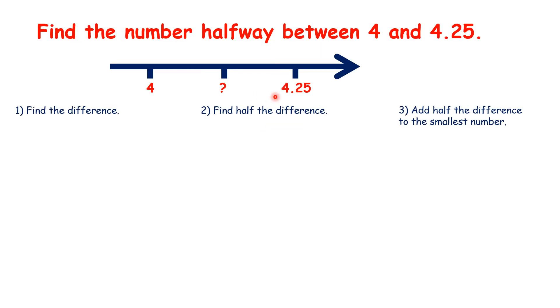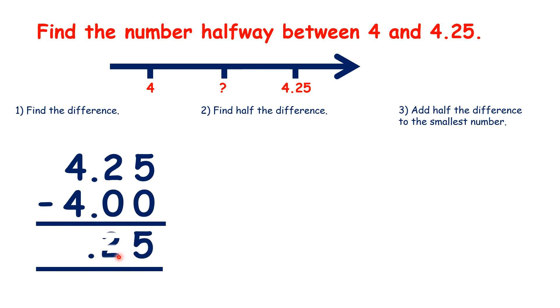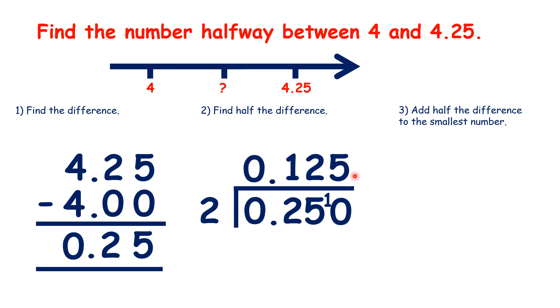Now, what is halfway between 4 and 4.25? We find the difference. Now, we need to find half of the difference. So, we need to extend our dividend with a 0. So that's 0.125.